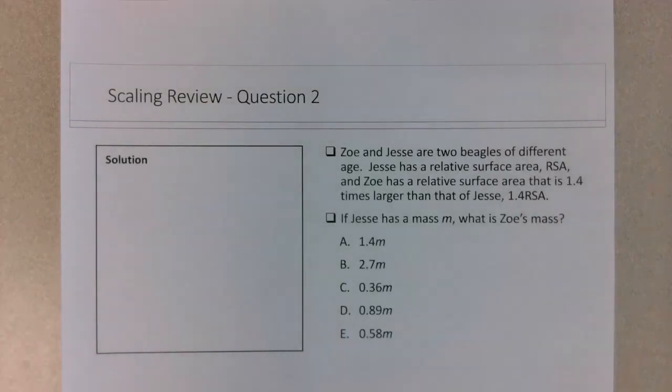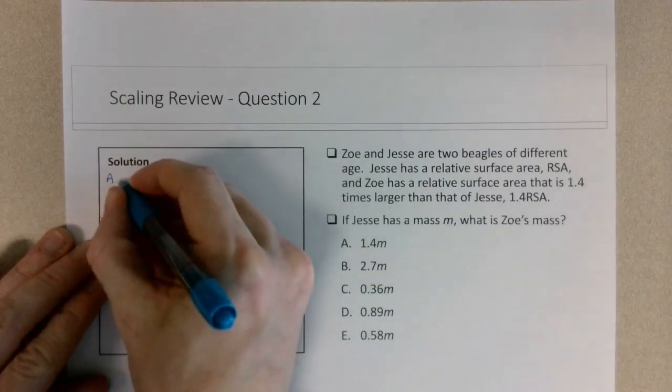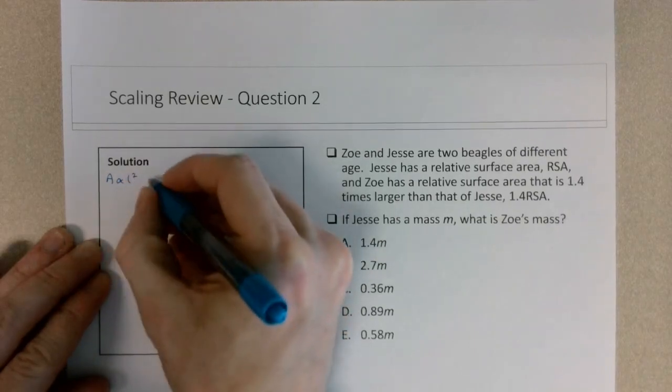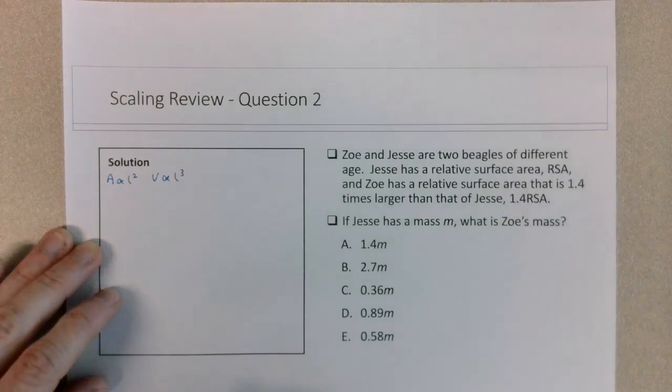Okay, so this scaling question is trying to address your understanding of how relative surface area scales with mass. That is not something that has been addressed in the lecture, but we can work through the derivation from scratch to develop a relationship for RSA and mass. We're recalling that area scales with L squared and volume scales with L cubed for any object that grows isometrically.